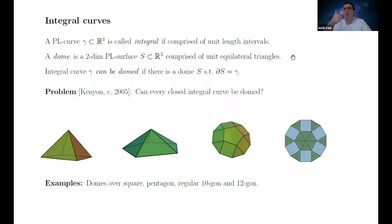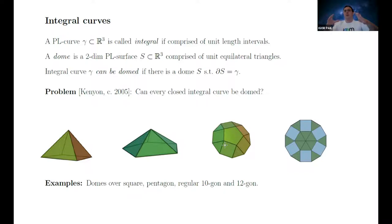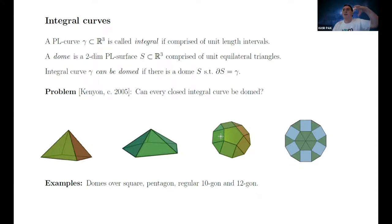Here are a bunch of examples of domes. Here is a dome over a square, and here is a dome over a pentagon — these are just regular pyramids. On the right there's something a little more complicated: a dome over a regular decagon. The way to obtain a dome is to attach a square or pentagonal pyramid to each square or pentagonal face. This is how you create domes over a regular 10-gon and a regular 12-gon.